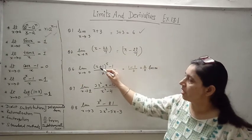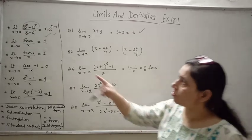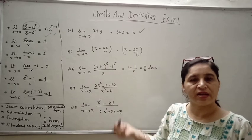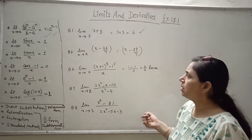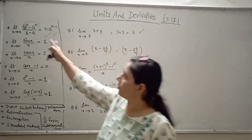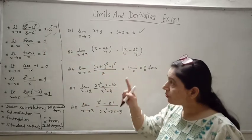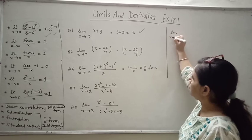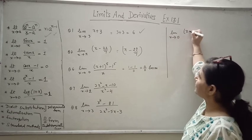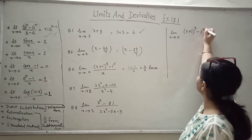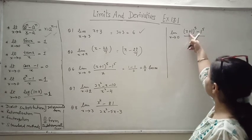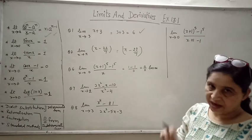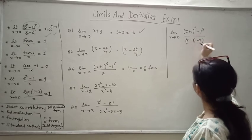We can see x plus 1 raised to power 5. We want to match the standard form x^n minus a^n. So I am going to rewrite it by adding and subtracting 1: x plus 1 raised to power 5, and then writing 1 raised to power 5 below. But we also need x tending to 1, specifically x plus 1 tending to 1.